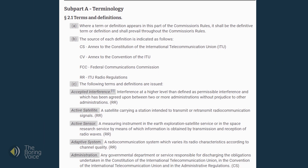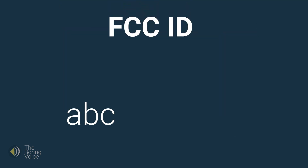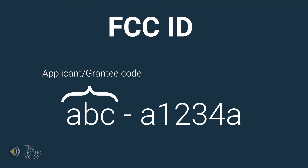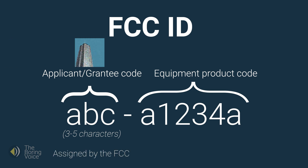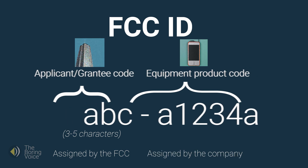The details of that certification are beyond the scope of this video. The FCC ID is made of two parts: an applicant code and an equipment product code. The first three to five characters represent the applicant. This code is permanently assigned by the FCC for the authorization of all RF devices from that specific company. The second half of the code is the product code, which is made by the company that made the device.